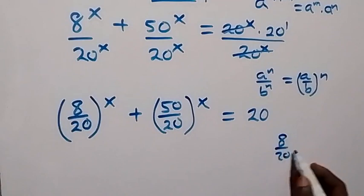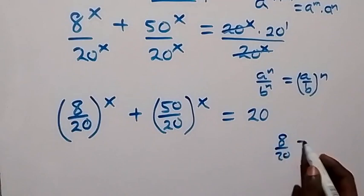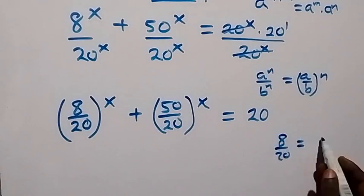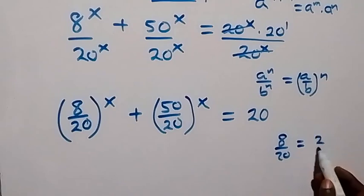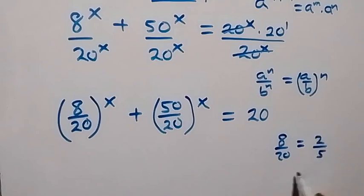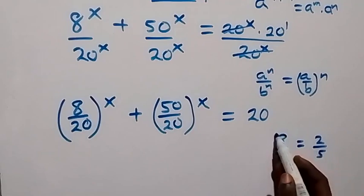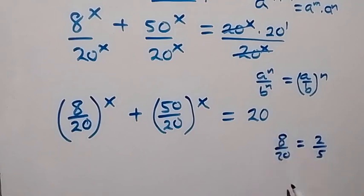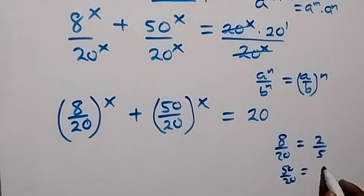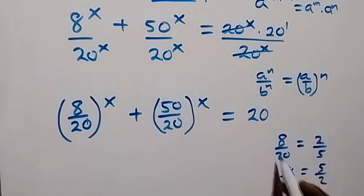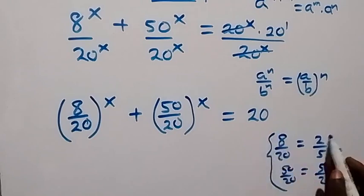For 8 over 20: 4 goes into 8 giving 2, and 4 goes into 20 giving 5, so that is 2 over 5. And for 50 over 20: 10 goes into both, giving 5 over 2. So now we can replace what we have here.